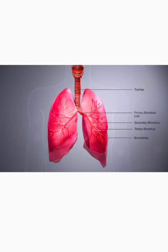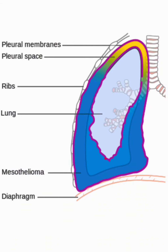The lungs are very spongy in nature and the left lung is smaller compared to the right lung because of the presence of the heart, which is positioned slightly towards the left side. The lungs are generally protected by two membranes called the pleural membranes. The space between these two membranes is called the pleural space, which is filled with a fluid called pleural fluid. Pleural fluid protects the lungs from physical injuries and provides lubrication during expansion.